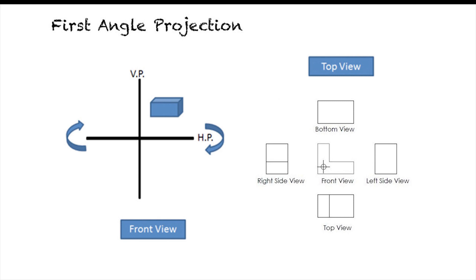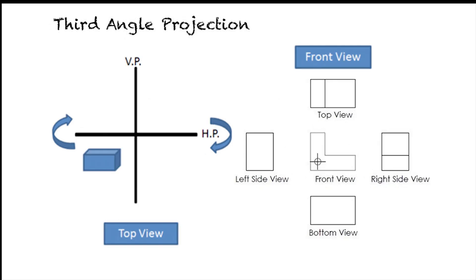This rotation brings the top view to the bottom of the projected front view. To draw right and left side views, the object's right and left side views are projected on vertical left and vertical right planes respectively. To bring the right side view on the 2D plane, the left plane is unfolded towards the left side. Therefore, the right side view is projected on the left side of the front view, whereas the left side view is projected on the right side of the front view.